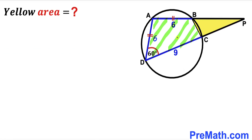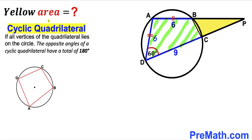Let's get started. Let's focus on this cyclic quadrilateral ABCD and recall its definition: if all the vertices of the quadrilateral lie on the same circle, then the opposite angles of a cyclic quadrilateral sum to 180 degrees. So since all vertices of ABCD lie on the circle, the sum of opposite angles equals 180 degrees, and therefore angle ABC turns out to be 120 degrees.